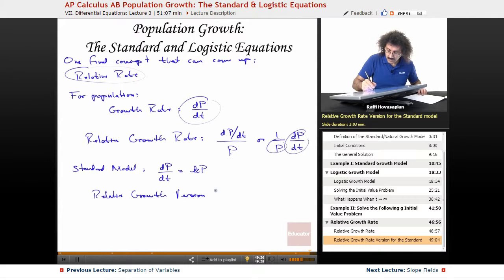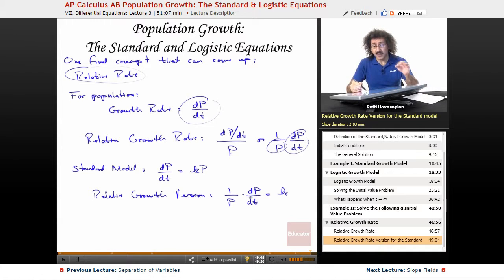Relative growth version: just divide. It's 1/p times dp/dt is equal to k. In words, this one is going to say the relative growth rate of the population is a constant. They're the same equation. The only difference between this equation and this equation is I've actually just divided by P and brought it over here. In words, that's the thing—it's the same equation. There's no difference.